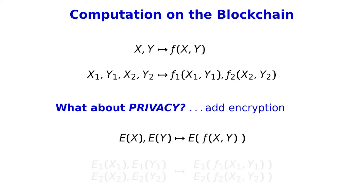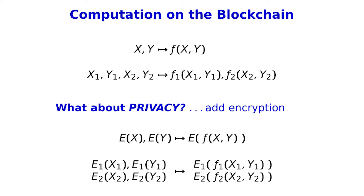In this example, where we have the state X and input Y and we want to compute the updated state F of X, Y, suppose that instead of knowing the state, the contract executor just knows an encryption of the state. And instead of knowing the input Y, the contract executor just knows an encryption of Y. From this, he's somehow supposed to compute an encryption of the updated state F of X, Y — encryption of X, encryption of Y, compute an encryption of F of X, Y.